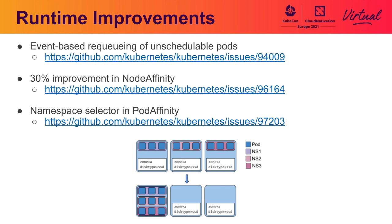We also had some runtime improvements for certain plugins. A big push going on right now — which just got some changes in for 1.20 — is event-based requeuing of unschedulable pods. Previously, the unschedulable queue would just requeue pods indiscriminately whenever events came in. The work going on with this allows certain plugins to register for certain events that should trigger pods to go back to the schedulable queue, making it more efficient and more reactive to things actually happening in the cluster.